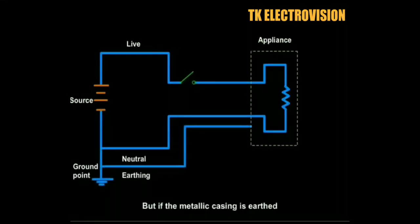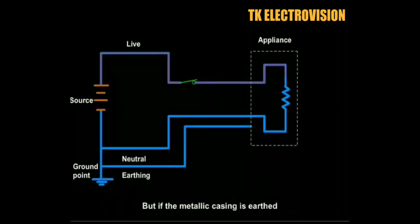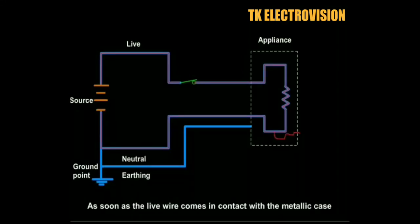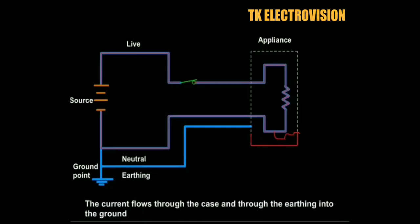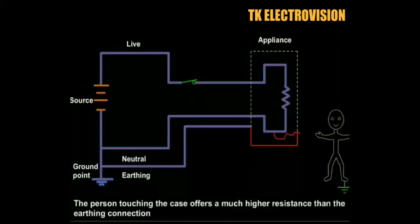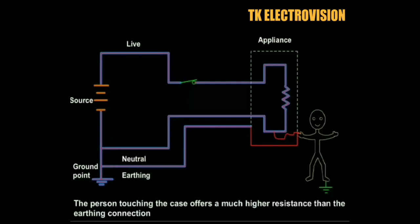To prevent this, the metal casing is connected to the earth wire. Now, if there is a fault in the appliance, the electric current flows from the metallic body into the ground or earth. This prevents electric shock.